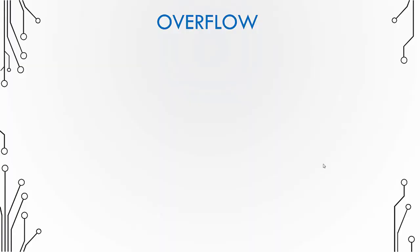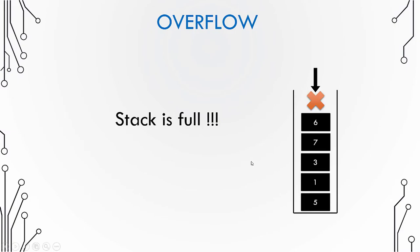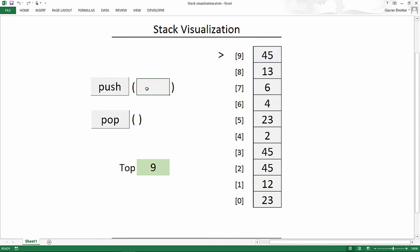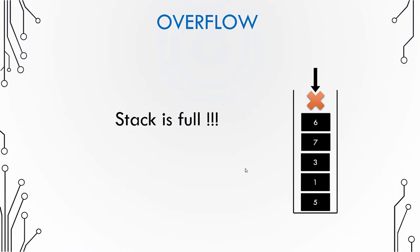If you keep adding elements to the stack, because arrays in many programming languages are of limited size, you can reach the end of the stack — meaning there is no more space to add new elements. In this case we say there is a stack overflow. If we try to push 56 onto a full stack, it will say there is a stack overflow because there is no more space.